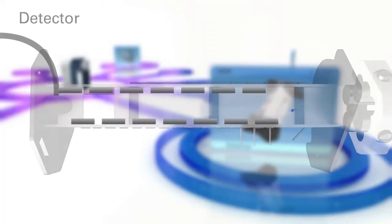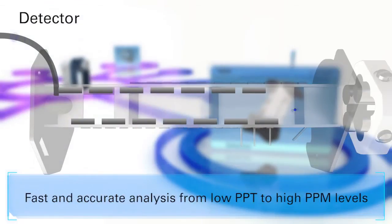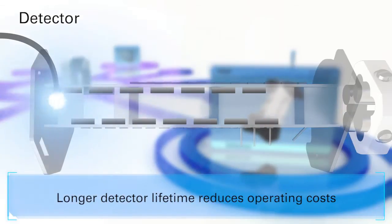Detector. The Aurora is the only ICP-MS to offer a fully digitized detection system, maximizing detector lifetime and providing more than nine decades of linear dynamic range in pulse counting mode. Longer detector lifetime.